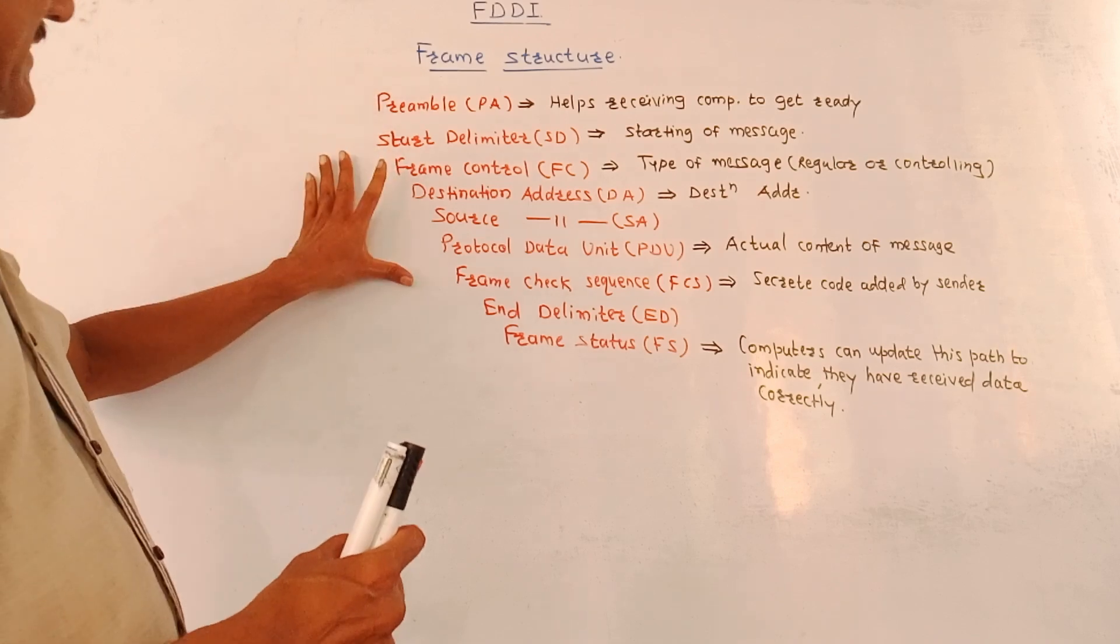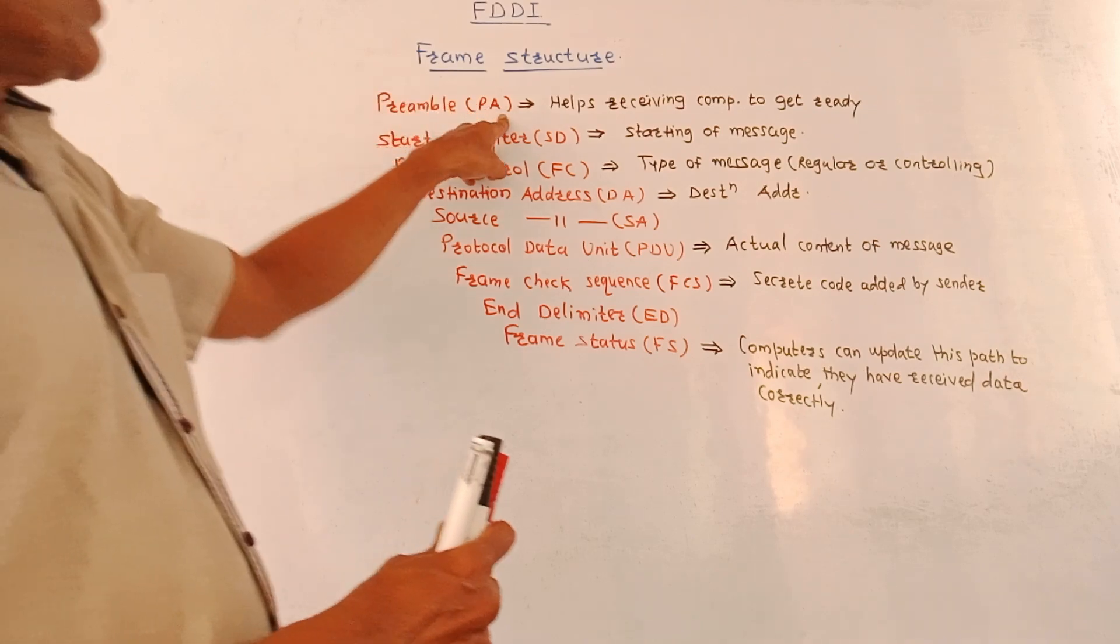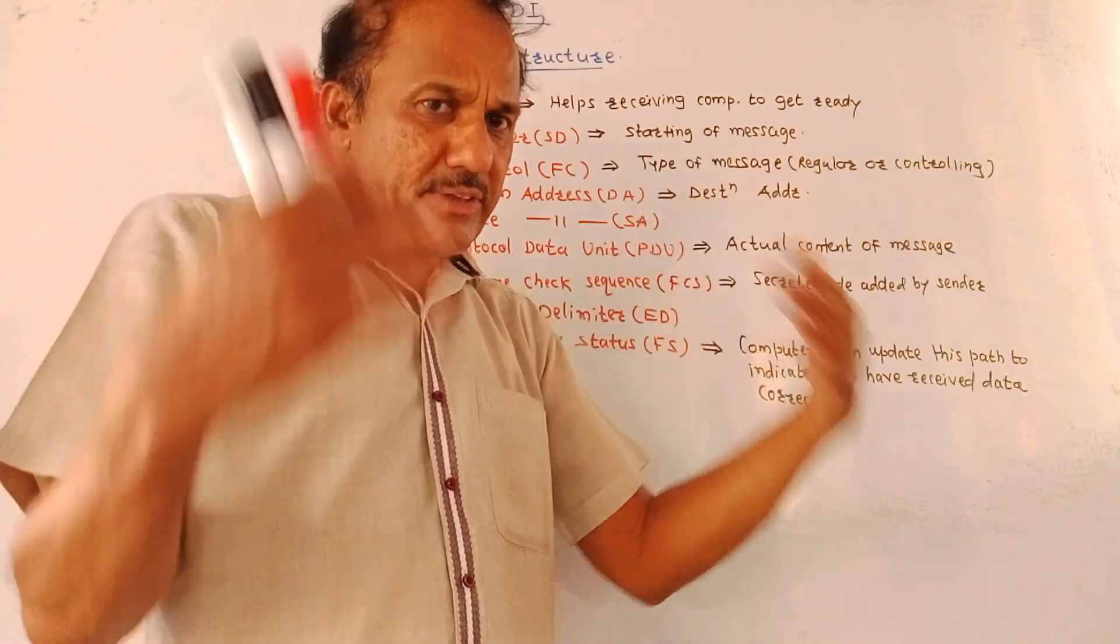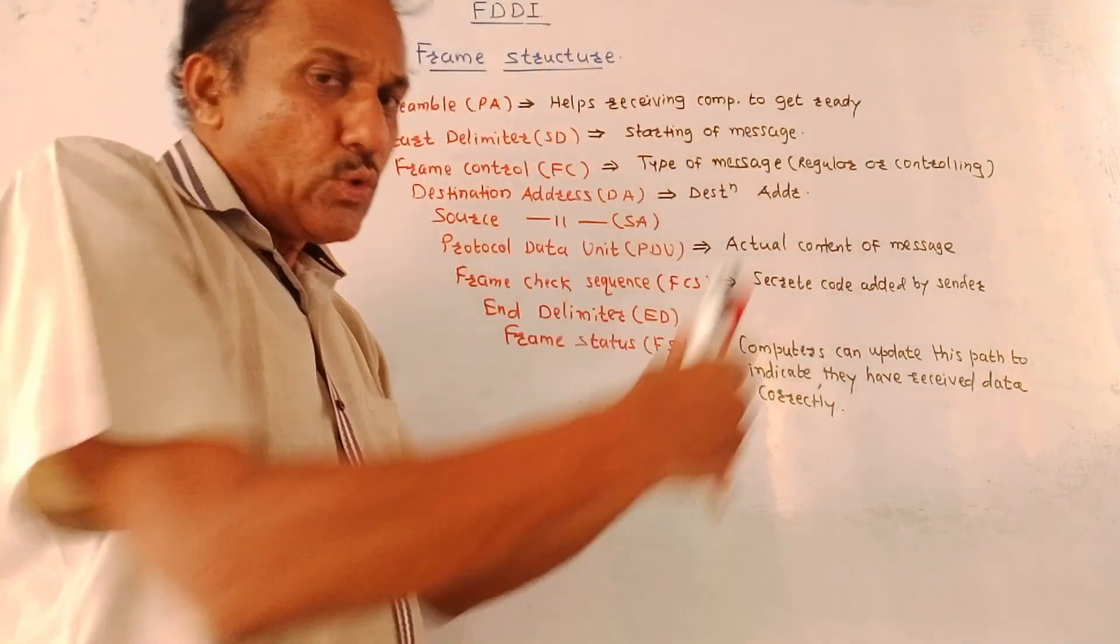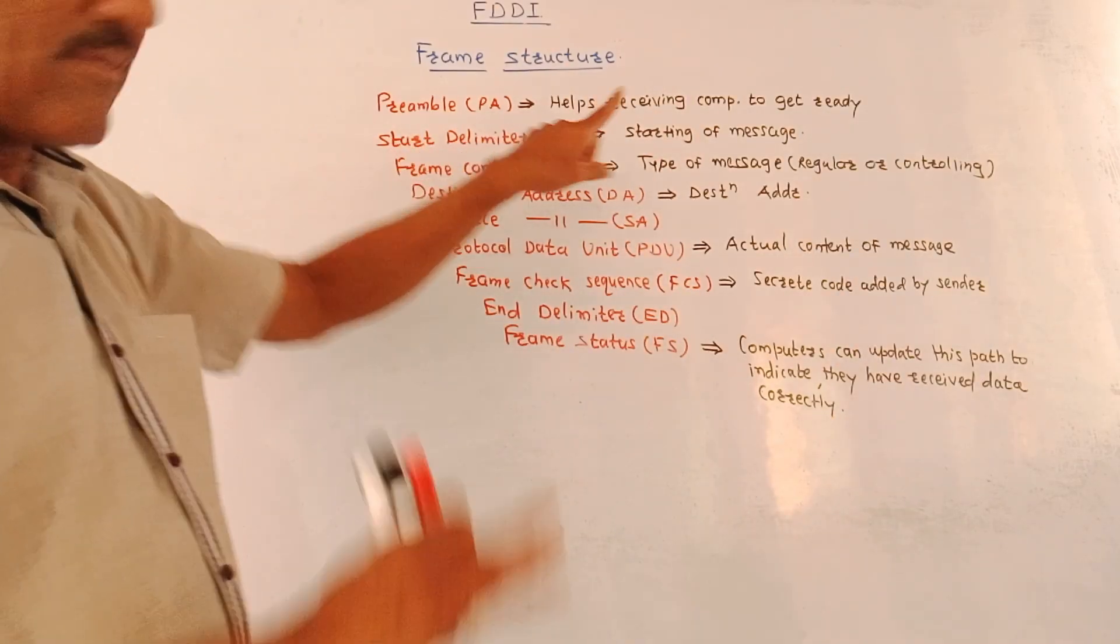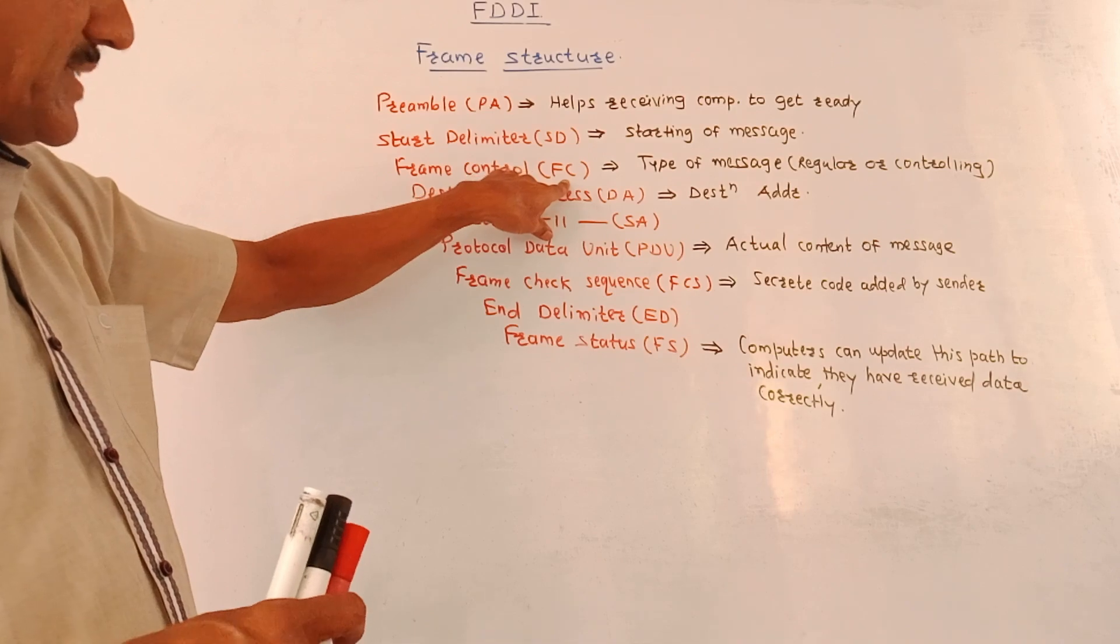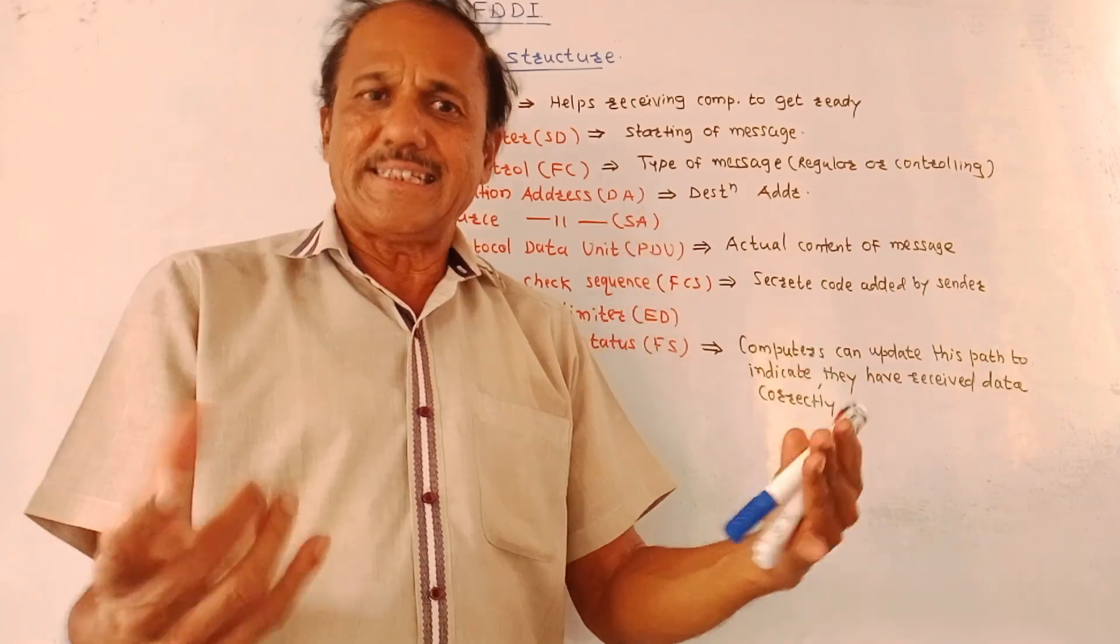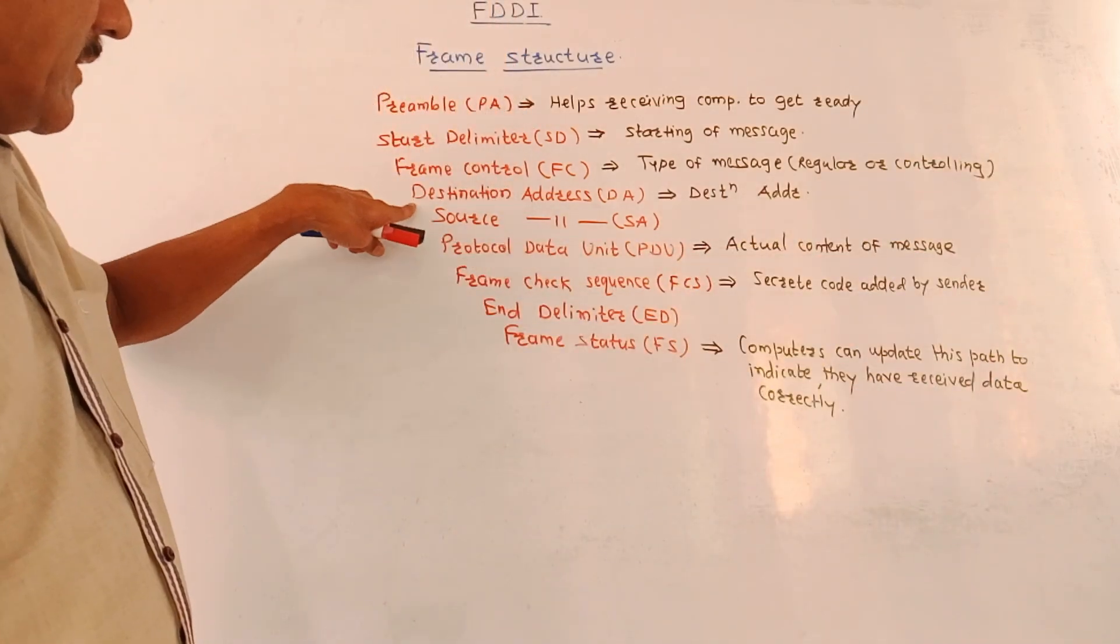Now, the frame structure consists of different parts. One is preamble section. This is preamble part, that is PA. It helps receiving computer to get ready. It is as if while starting any conversation, we are saying hello. That means, it helps the receiving computer to get ready to receive, to accept that message coming from the sender computer. Then start delimiter, that is SD. Very simple. It indicates the starting position of the message. Then frame control, FC. This portion gives the information about which type of message is that. Is it a regular message or is it a controlling type of message.